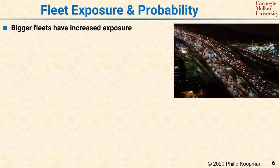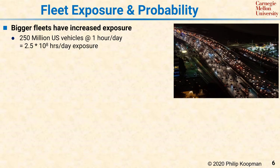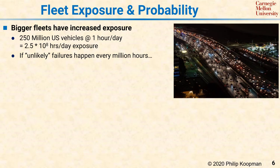An important context for designing critical systems is understanding fleet exposure and the probability of a loss event or mishap. In general, bigger fleets of deployed systems have a higher level of exposure to hazards. Take the U.S. vehicle fleet as an example — about 250 million vehicles, each operated about one hour per day, giving 250 million hours of exposure every single day. Intuitively, many people think that if something happens once every million hours it's an unlikely event, and that makes sense in everyday life because a human lifespan is less than a million hours — so it can be considered a once-in-a-lifetime event.